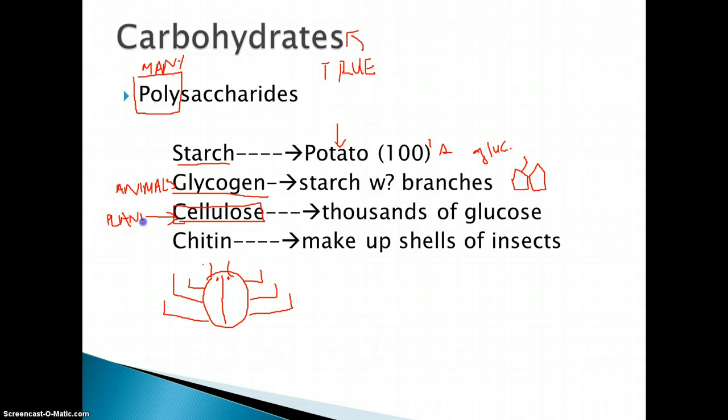Then we have this called chitin. And it makes up the shells of insects. If you've ever crushed a bug, taken its life, and you hear that crunch—that's the chitin. What it does is make up the shell of an insect, like a beetle or something. It is the exoskeleton.